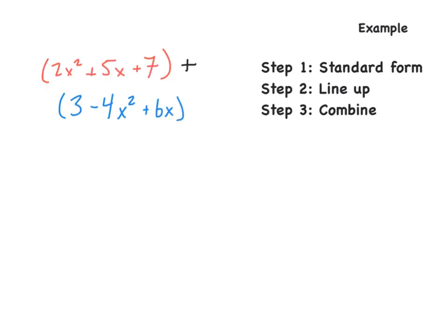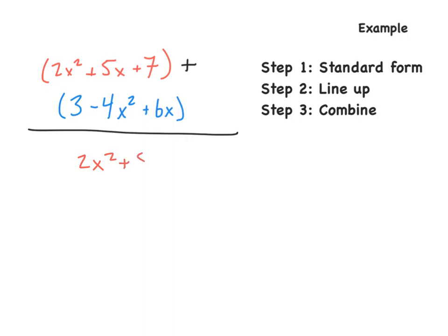We have an addition problem. We have the quantity of 2x squared plus 5x plus 7, plus the quantity of 3 minus 4x squared plus 6x. Step one: we need to write everything in standard form. The first one — 2x squared plus 5x plus 7 — looks like it is already in standard form, so I'm just going to write that down.